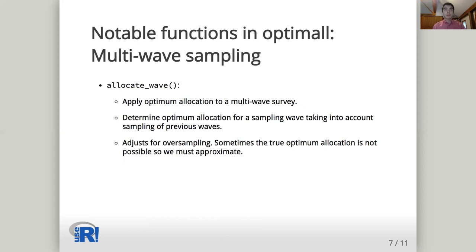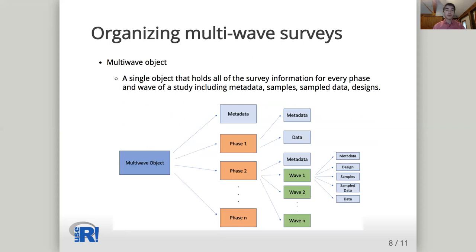In addition to these broadly useful survey design functions, OptiMall contains tools specifically created for use in multi-wave designs. For those unfamiliar, these designs conduct sampling over a series of iterative waves, adjusting estimates to better approximate the true optimum allocation after each wave. The function allocate wave facilitates this iterative process by determining the optimal allocation for each sampling wave, taking into account units that have already been sampled in previous waves. The allocation that it produces is approximately optimal for the current wave, even if some strata have already been oversampled.